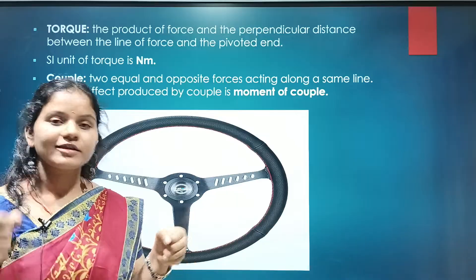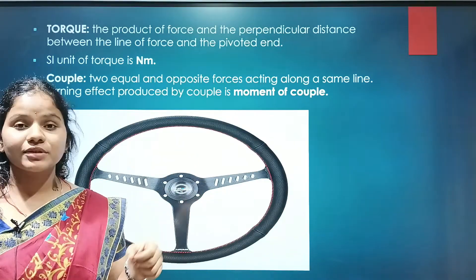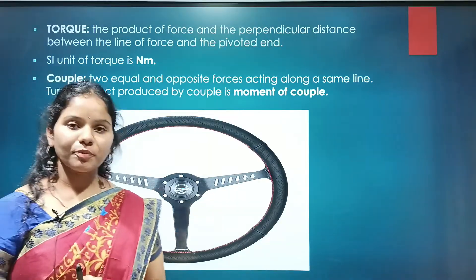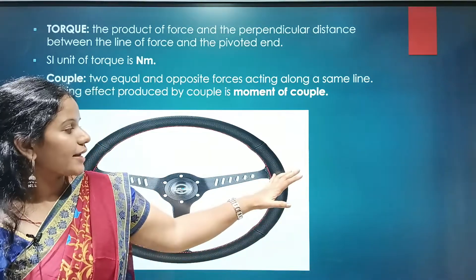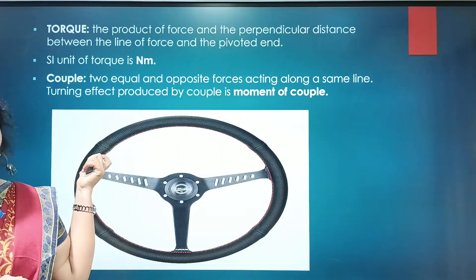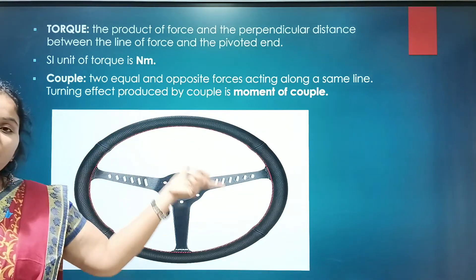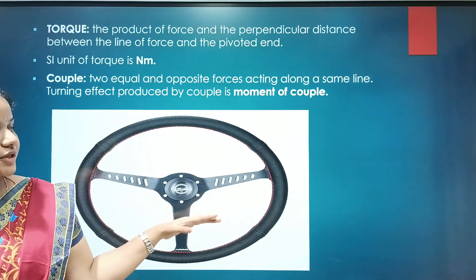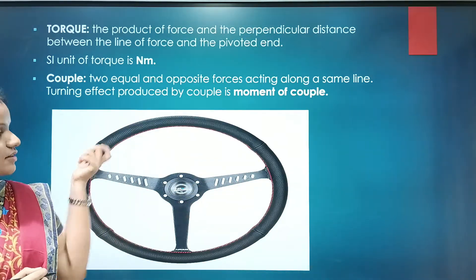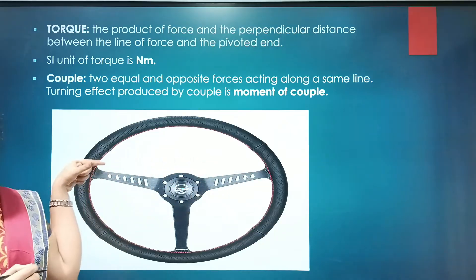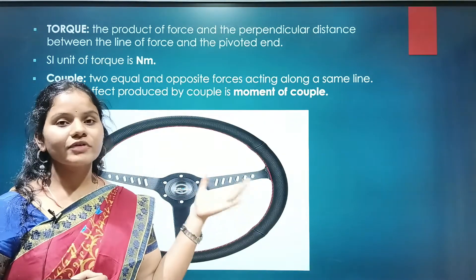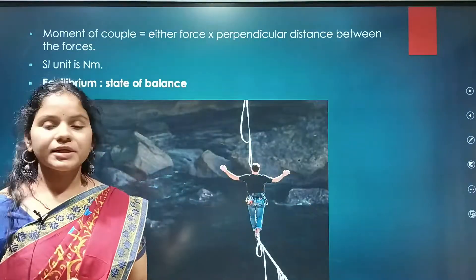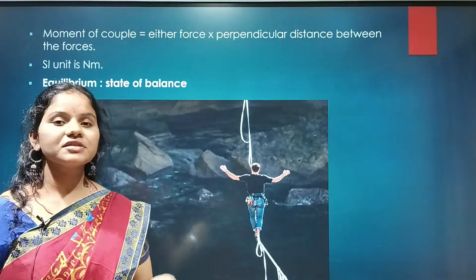When you are driving a car, a turning effect is produced. That turning effect is called the moment of couple. You apply a force on each side of the steering wheel — these two forces are equal in magnitude. Therefore, moment of couple is defined as either force multiplied by the perpendicular distance between them. The SI unit of moment of couple is Newton meters.